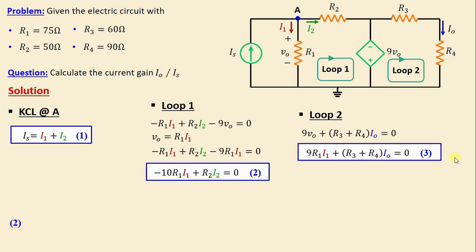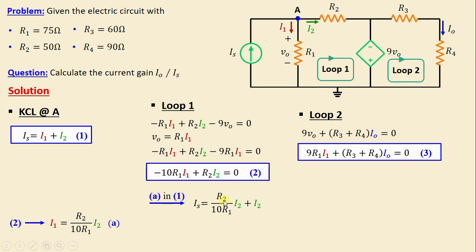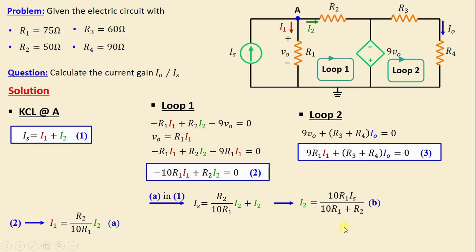From Equation 2, we can write I1 = (R2 / 10·R1)·I2 — call this Equation A. Substituting A into Equation 1, we get: IS = (R2 / 10·R1)·I2 + I2, which simplifies to: I2 = (10·R1·IS) / (10·R1 + R2). We'll call this Equation B.